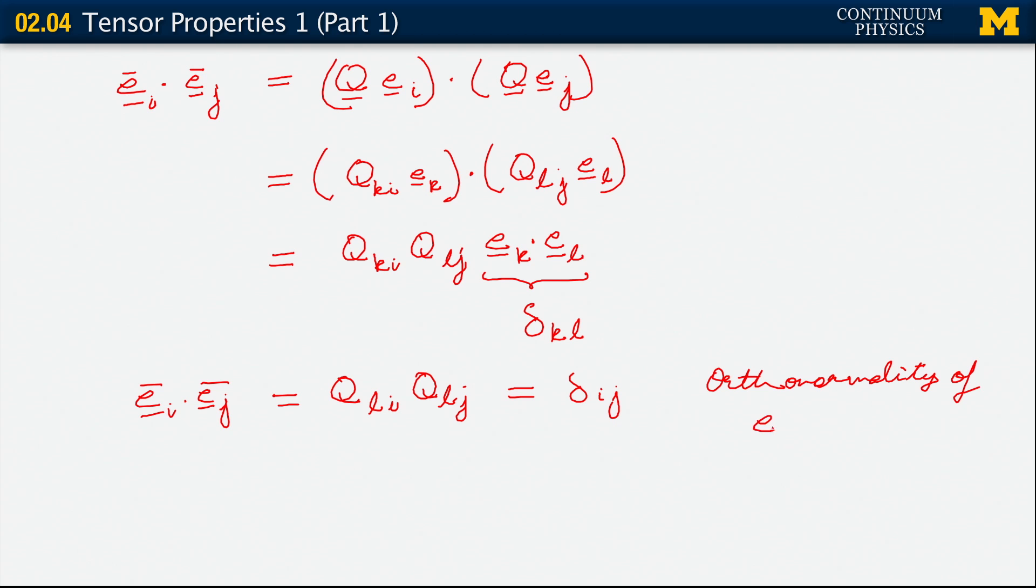So orthonormality is preserved. Orthonormality of the basis set e_i bar, i equals 1, 2, 3. That property is preserved.